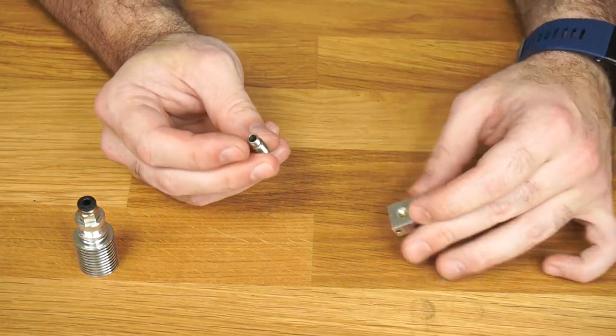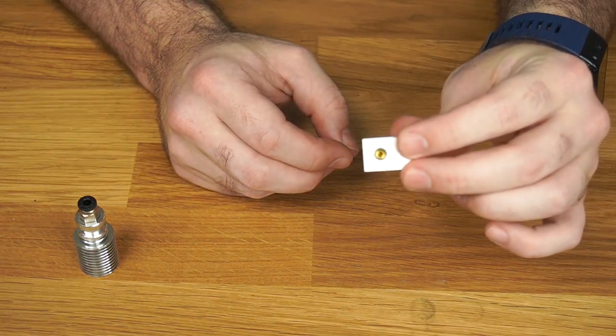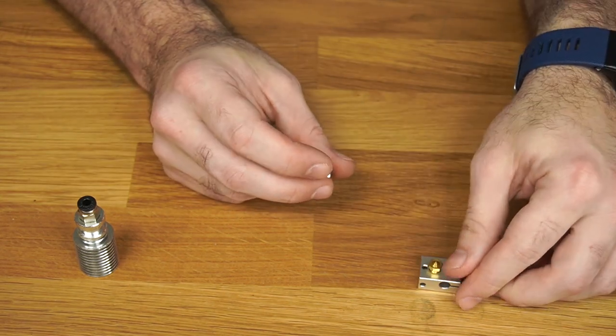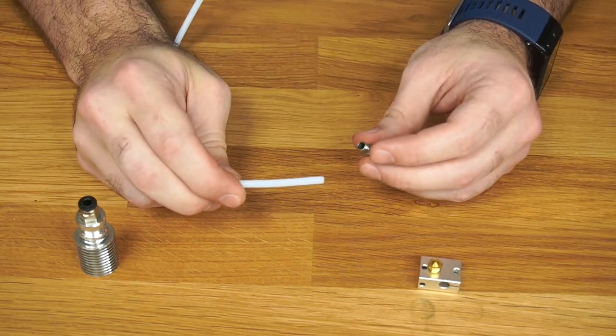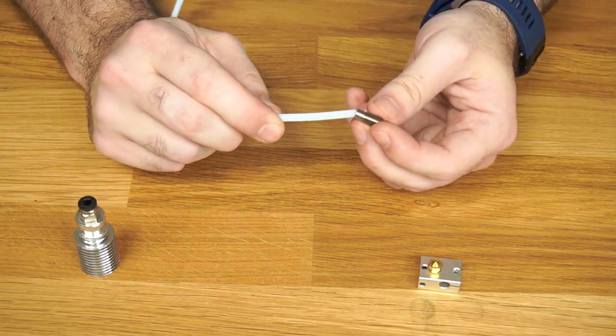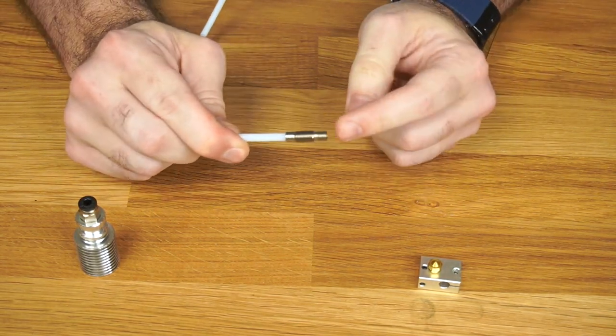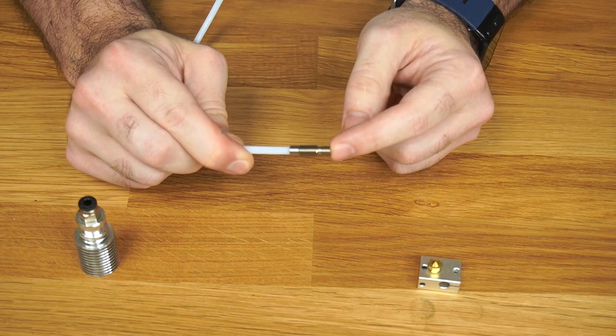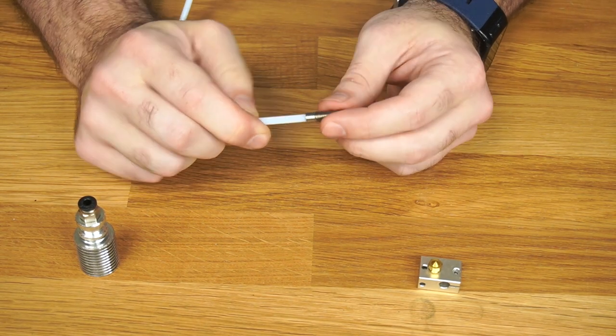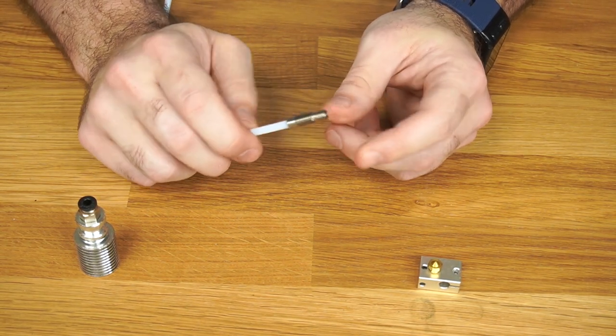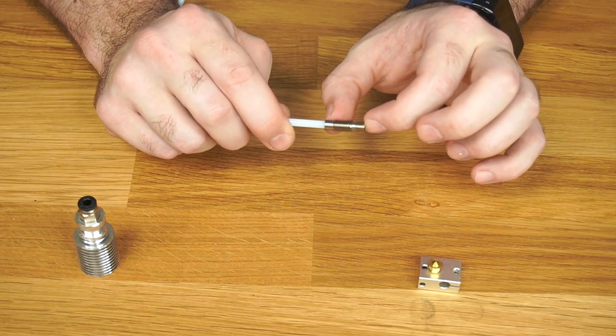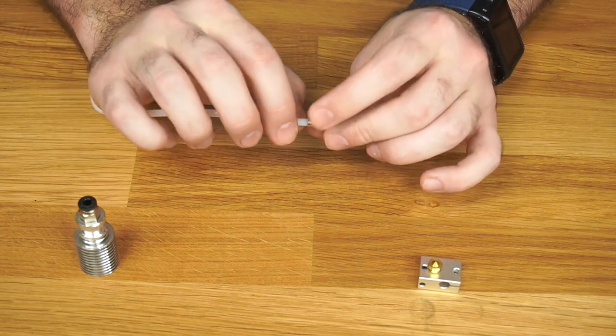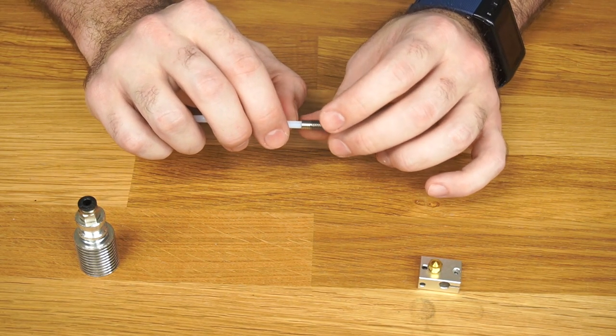So this is the heat brake and the heater block with the nozzle still attached. And so what we're going to have to do is take this PTFE tubing and push it all the way down inside of the heat brake, and then we're going to trim off the top. And that way you'll have a separate piece of PTFE tubing inside your heat brake. Then your Bowden tube can just come up and rest against that. It doesn't have to be completely flush.